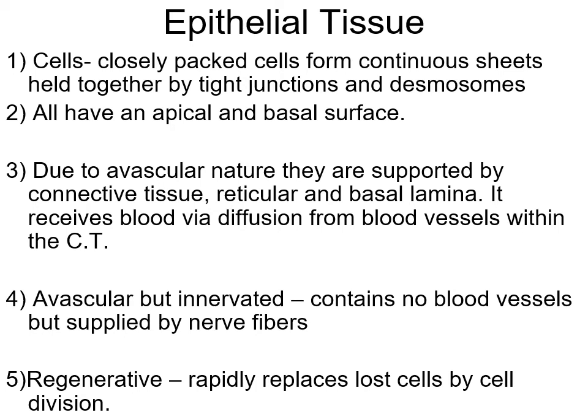There's a basement membrane, sometimes called the basal lamina or lamina propria. Number three: due to the avascular nature - avascular means it does not have its own blood supply - epithelial tissue actually receives blood through diffusion from the connective tissue below. It's supported by the connective tissue below, which has a reticular and basal lamina, and receives blood through diffusion from blood vessels within the connective tissue.